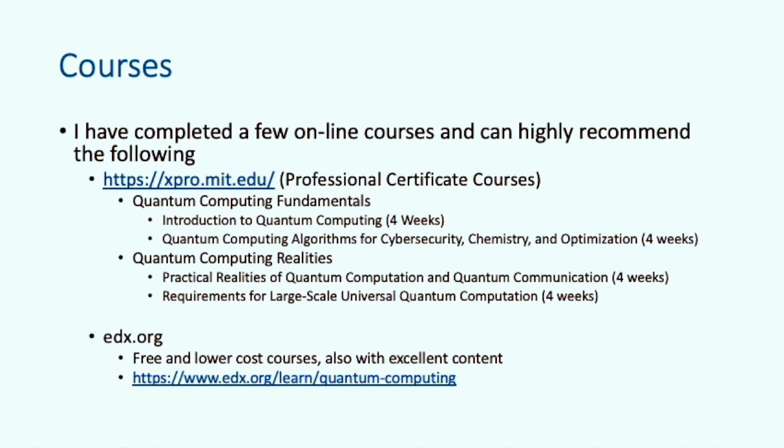If you want to go further down the rabbit hole, these courses are excellent, and I highly recommend the MIT xPRO courses. There are two certificate programs, consisting of two courses per program. Each course will take about four weeks, and you need to commit about 10 to 12 hours a week. These courses cost around US$2,000 per course, so about $4K per certificate. edX.org is also a great site for online university quality courses, and most of them you can run for free and only pay if you want the official certificate.